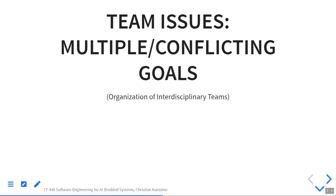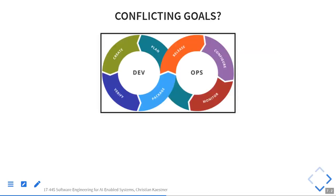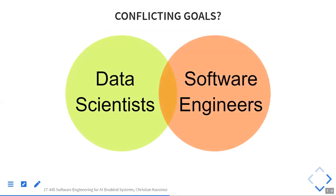A different team issue is having multiple and conflicting goals. This is the basis for DevOps, where developers wanted to push new features quickly while operators wanted to keep the system running. These goals don't necessarily align well — bringing out features quickly doesn't mean they're highest quality or easy to operate. What are some conflicting goals between data scientists and software engineers?